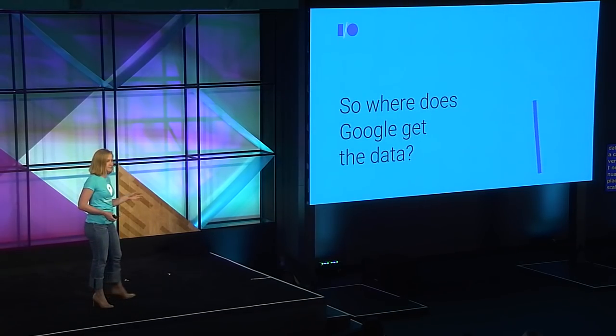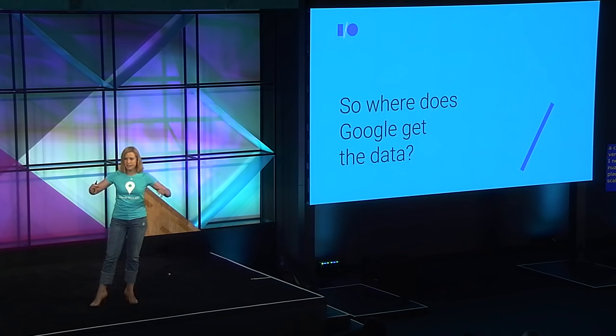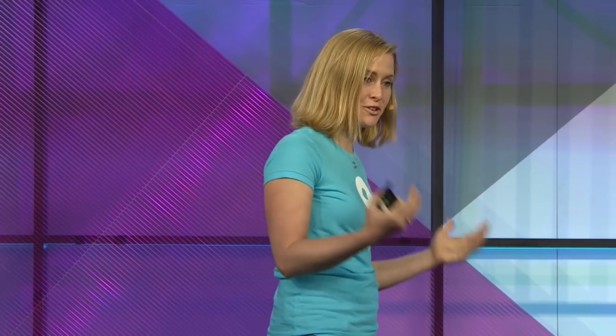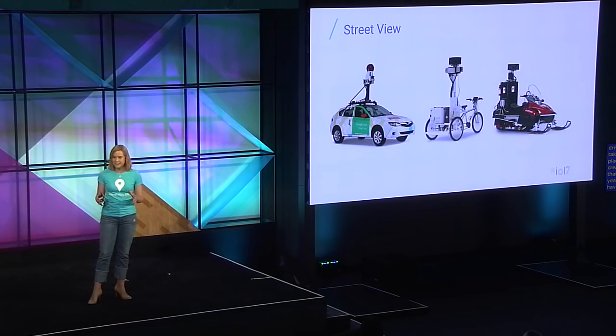So where does Google get all this data? We collect it from a variety of sources. The first is Street View: we have cars driving the streets of the world taking 360-degree imagery, creating immersive experiences. As virtual experiences become more prevalent, this immersive imagery will be critical. And it's not just cars — we have bikes getting 360-degree imagery, even backpackers with 360-degree cameras trekking the Grand Canyon.